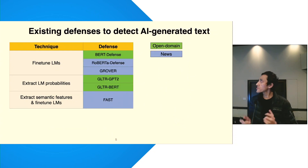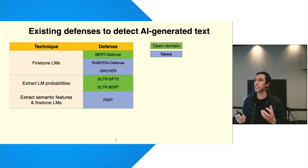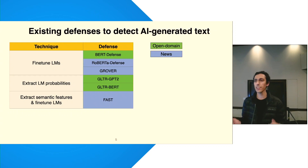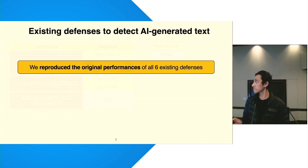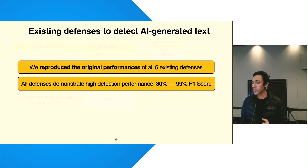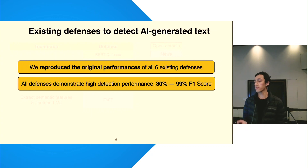Some of these defenses are trained only on news datasets so that they can detect AI-generated fake news, whereas the others are trained on broad categories of text so they can detect text from any domain. We reproduced the original performance of all the existing defenses and show that they all demonstrate high detection performance in the range of 82–99% F1 score on their test sets.